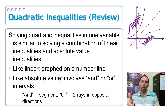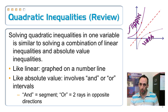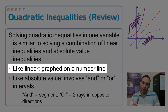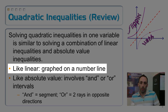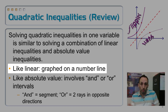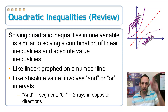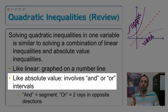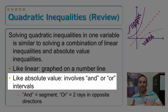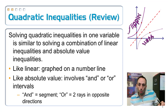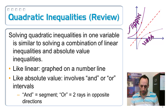Solving quadratic inequalities with one variable — just an x — is kind of like solving linear inequalities. It's graphed on a number line, not on an x-y coordinate plane. And it's also like absolute value inequalities, in that it involves either an and inequality or an or inequality.